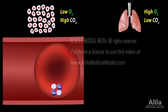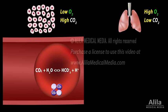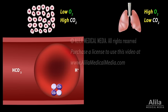The majority of carbon dioxide is transported in the blood in the form of bicarbonate ions. Conversion of carbon dioxide to carbonic acid, which dissociates into bicarbonate and hydrogen ions, is catalyzed by an enzyme present in red blood cells called carbonic anhydrase. Bicarbonate ions then diffuse out to the plasma to be exchanged for chloride ions, while hydrogen ions bind to hemoglobin that has released oxygen.